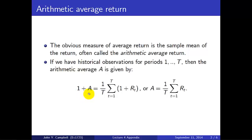Or we might more normally think about this by subtracting one from both the left-hand side and the right-hand side, and we see that A is the sample average of the Rs, the net returns.